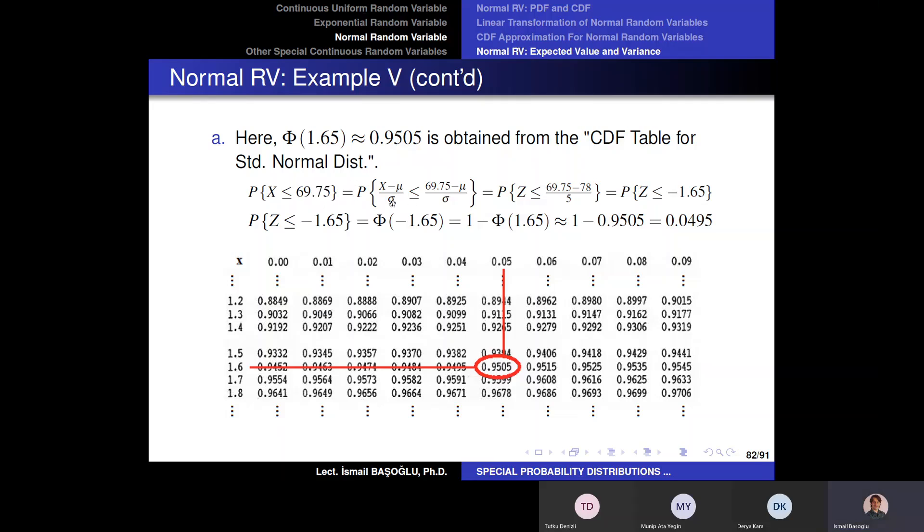Now how do you calculate this probability by standardization? Again standardize by subtracting mu and dividing by sigma. Now if you have an incorrect sigma here, you are going to make mistakes. If you divide by 25 here, then the result is going to be wrong. So you need to be careful in defining sigma. Sigma is the square root of the variance. And the probability of z being less than or equal to minus 1.65 can be obtained from the CDF table. By subtracting the CDF at 1.65 from 1, and the CDF at 1.65 is 0.9505.